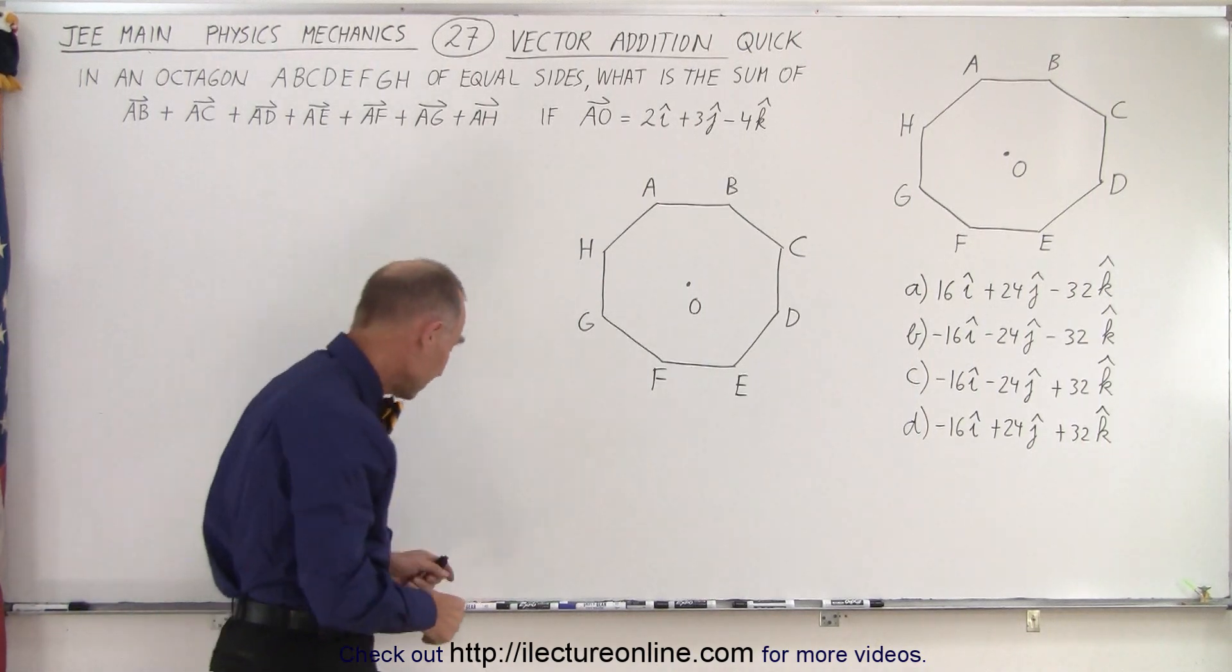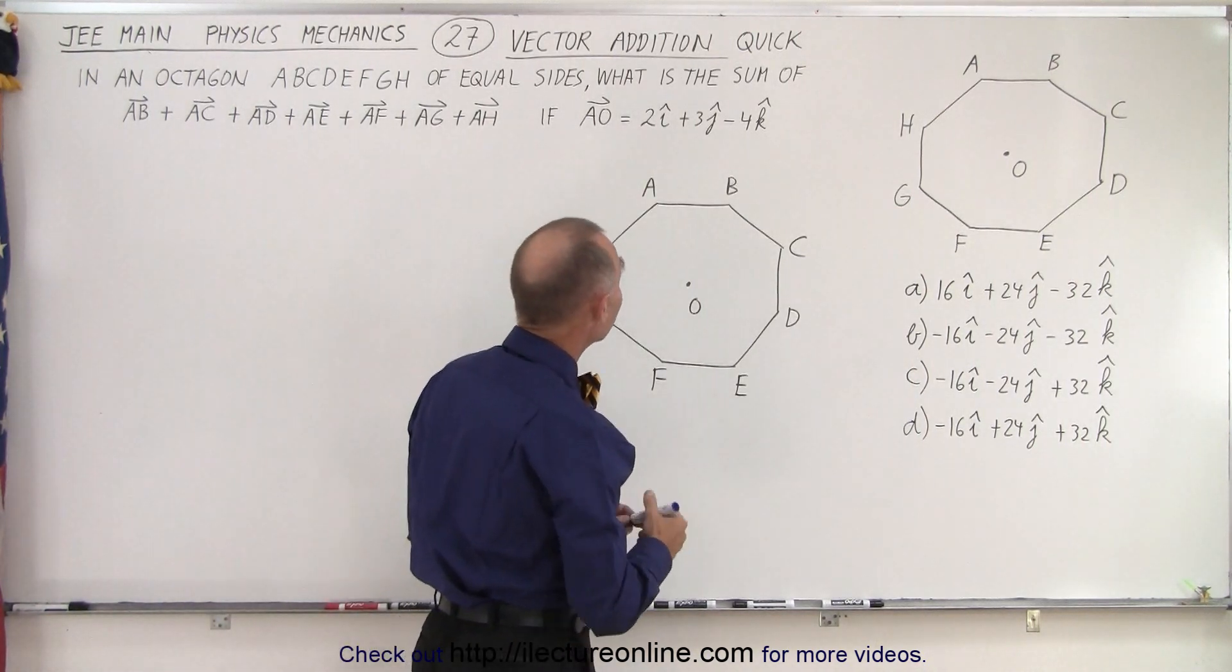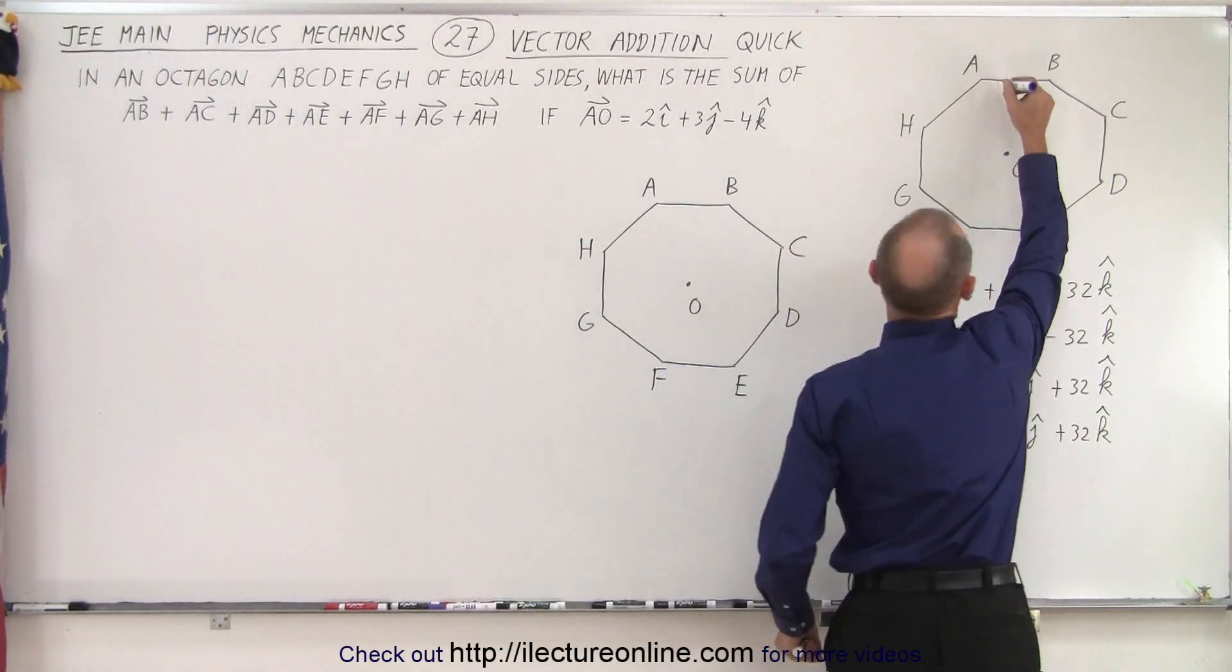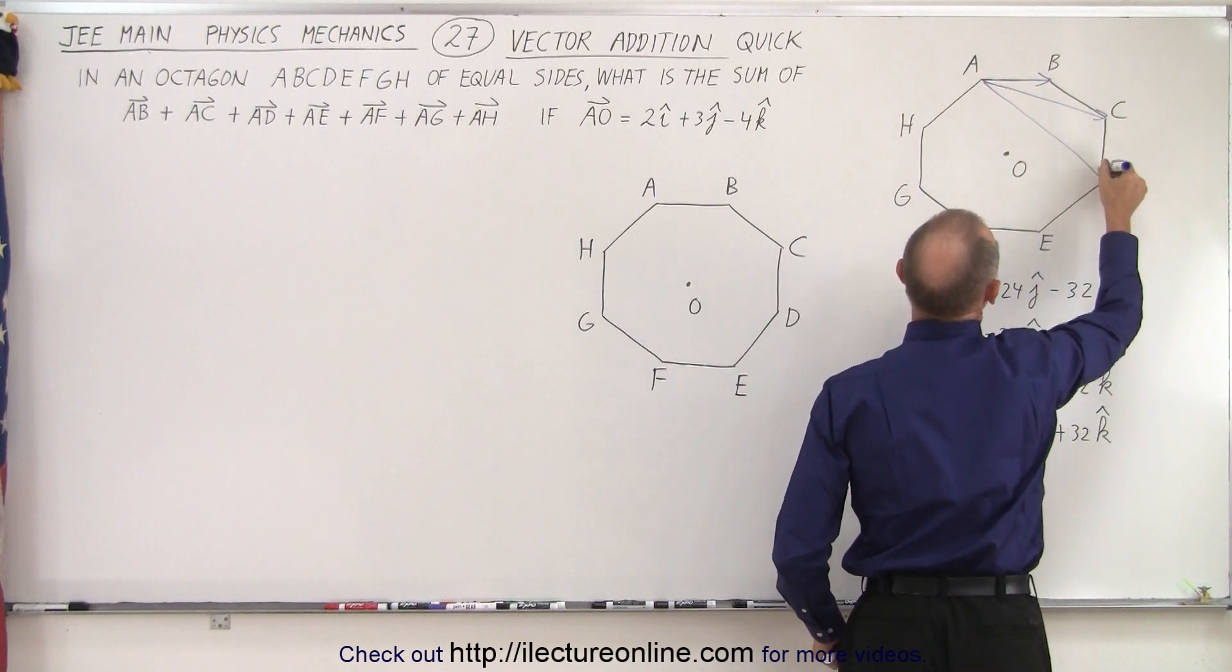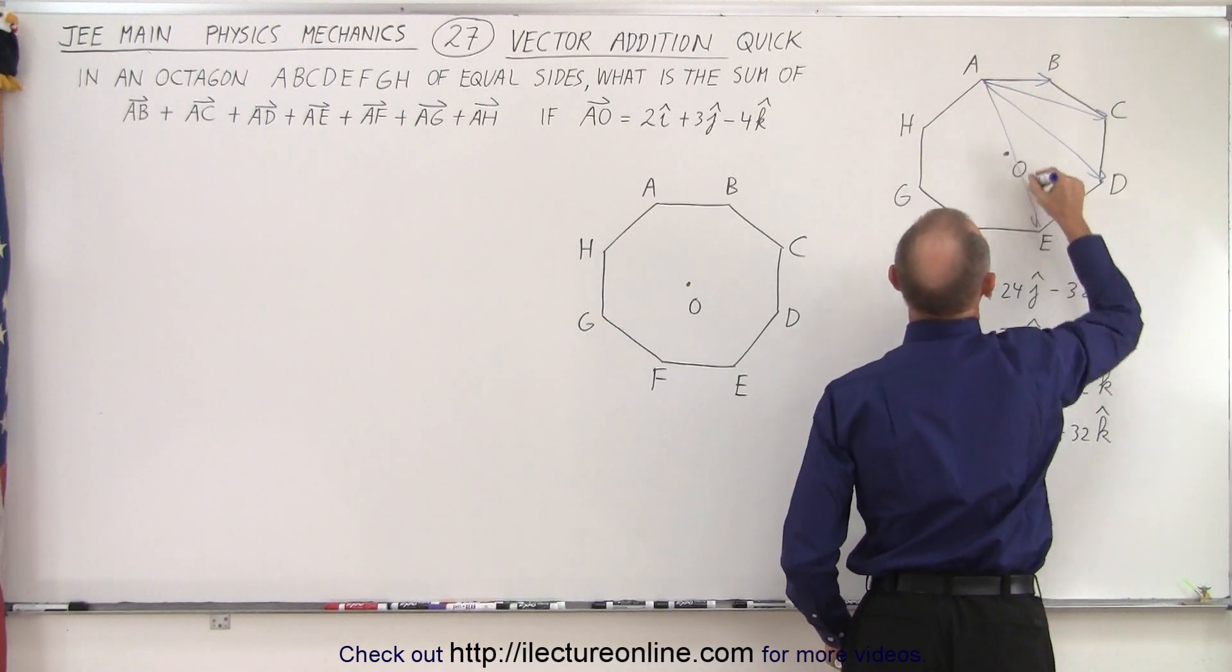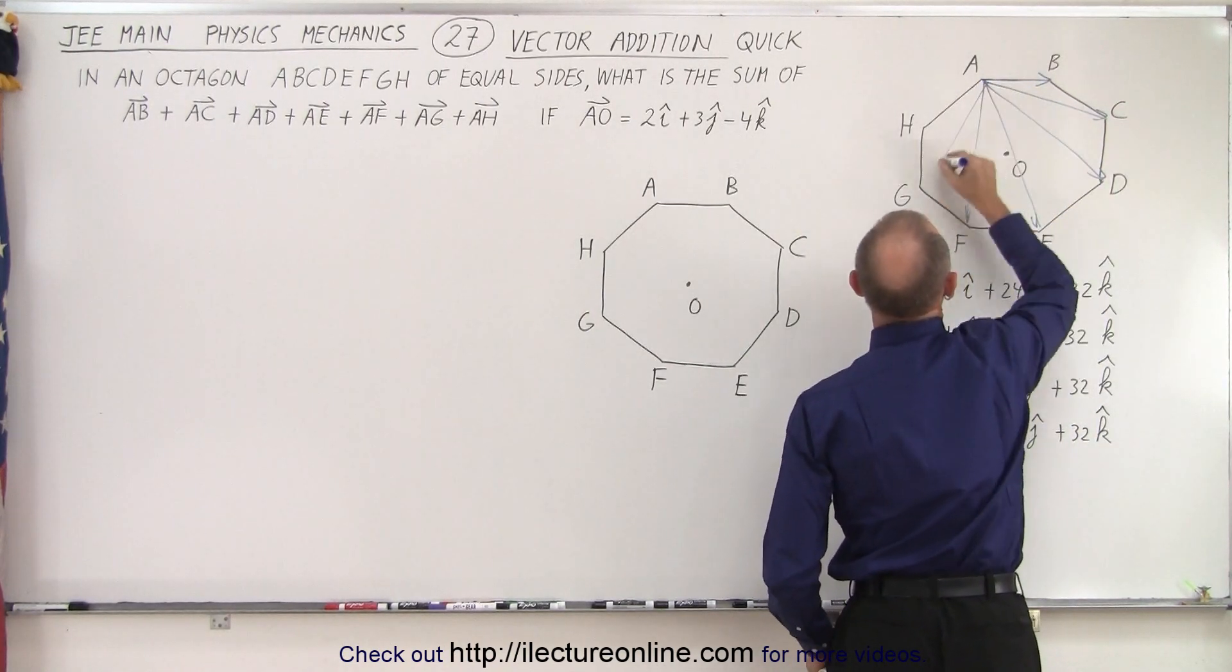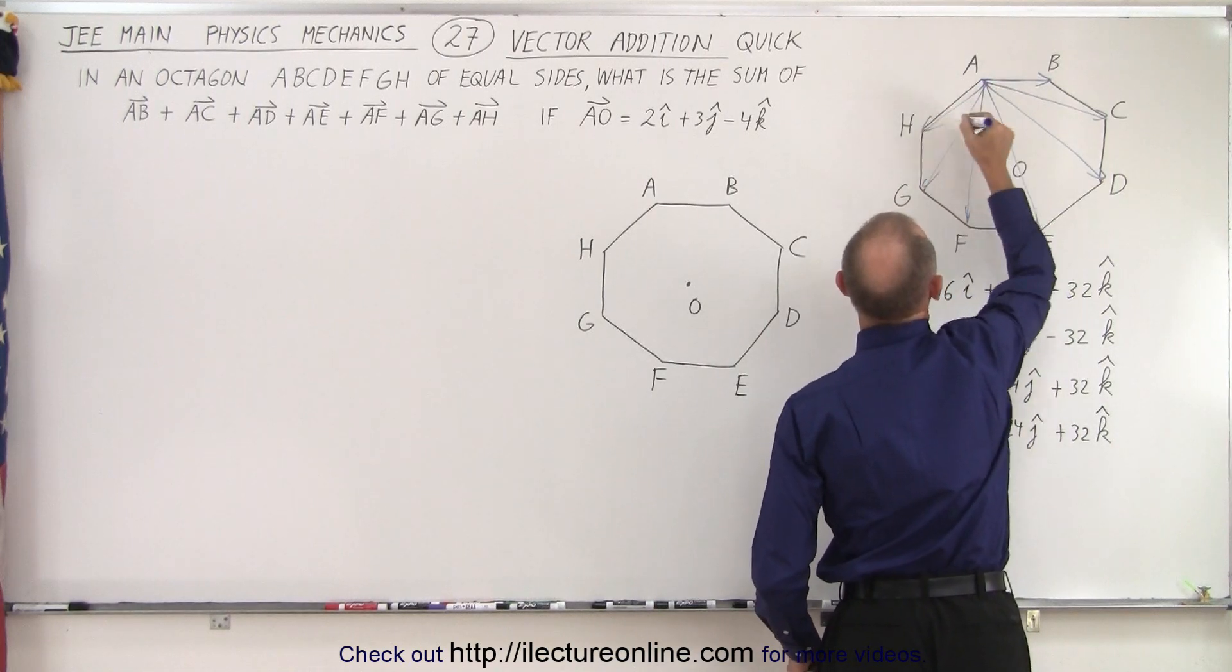So what they're asking us to do is the following. They're asking us to find these vectors: the sum of A to B, the sum from A to C, from A to D, from A to E, from A to F, A to G, and A to H.